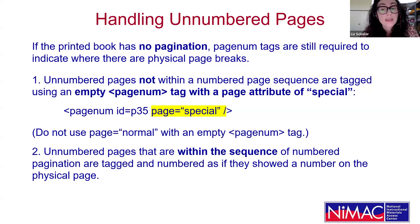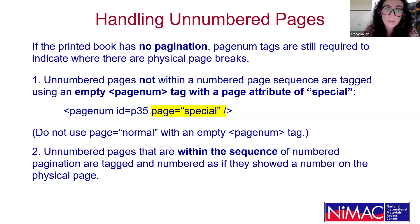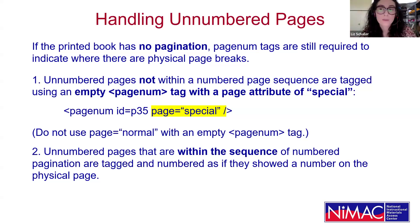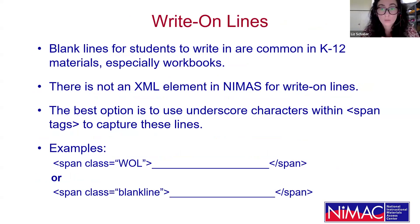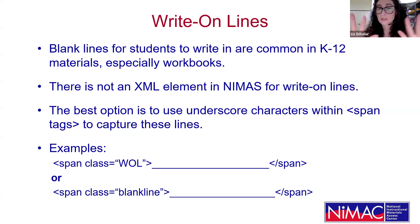Unnumbered pages that are within the sequence of numbered pagination are tagged and numbered as if they showed a number on the physical page. This might be a situation where all the odd numbered pages in the book don't have a page number present, but they are part of the sequence of pagination in the book. If you have any questions about pagination or how to tag page numbers on a specific file, especially one of those more unusual files, please don't hesitate to reach out.